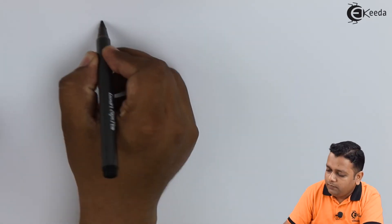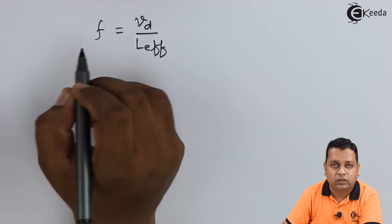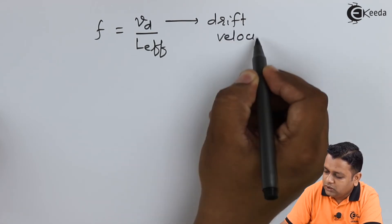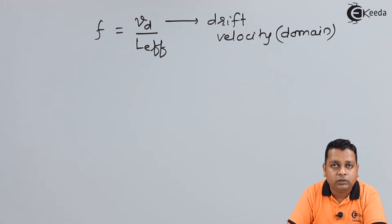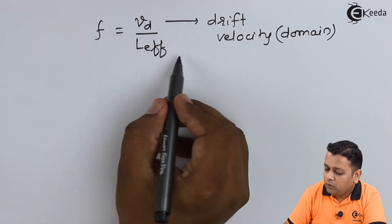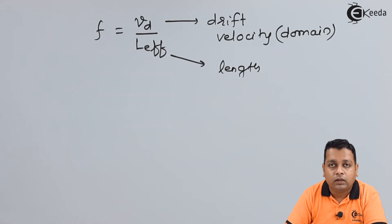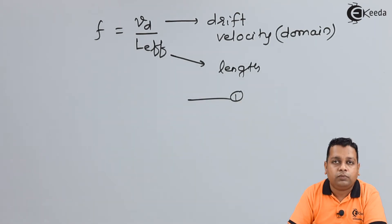The pulsed current obtained as output has a frequency of operation denoted by F, given by: F = V_d / L_eff, where V_d represents the drift velocity of the domain — approximately equal to the drift velocity of the electron — and L_eff is the length the high-field domain has traveled inside the specimen, generally from the cathode terminal to the anode terminal. This is equation number one giving the frequency of oscillation.